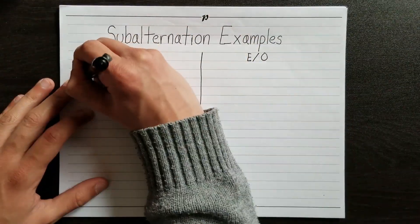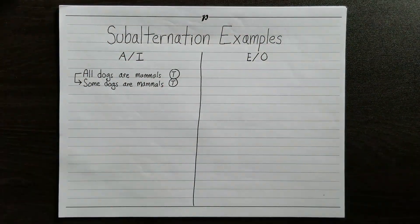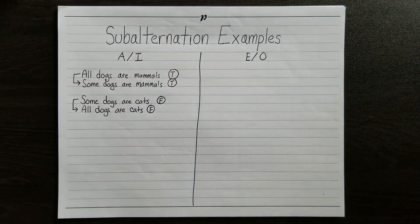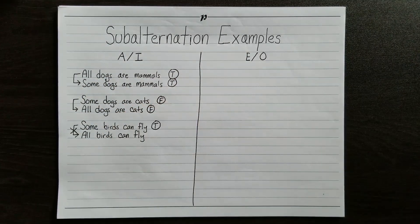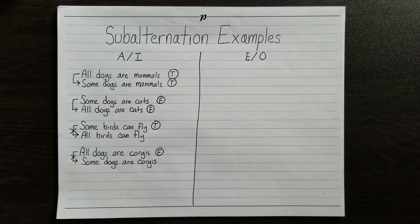For example, if it's true that all dogs are mammals, then it must be true that some dogs are mammals. If it's false that some dogs are cats, then it's also false that all dogs are cats. However, if it's true that some birds can fly, this doesn't tell us anything about whether all birds can fly. Similarly, if it's false that all dogs are corgis, this tells us nothing about whether some dogs are corgis. If you didn't know anything about birds, and someone just told you that some of them could fly, this wouldn't tell you anything about whether they all could.